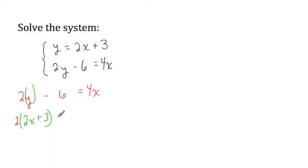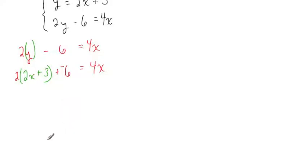And I continue writing the rest of the equation. Minus 6 equals 4x. I can change subtraction to addition by adding the opposite. And then I can continue simplifying. I need to distribute the 2. 2 times 2x is 4x plus 2 times 3 is 6. Then we get plus negative 6 equals 4x.